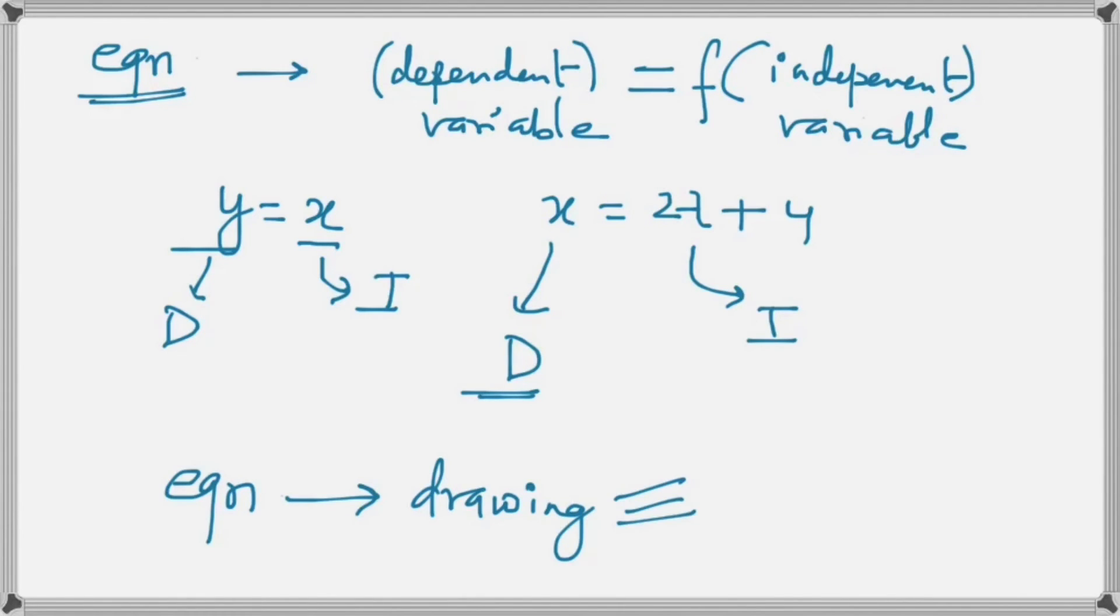That is, a graph shows the relationship between independent and dependent variables. Let us look at some common types of graphs that we encounter in physics. So we have types of graphs. First will be a line, and by line I mean a straight line. We will also see some circles.